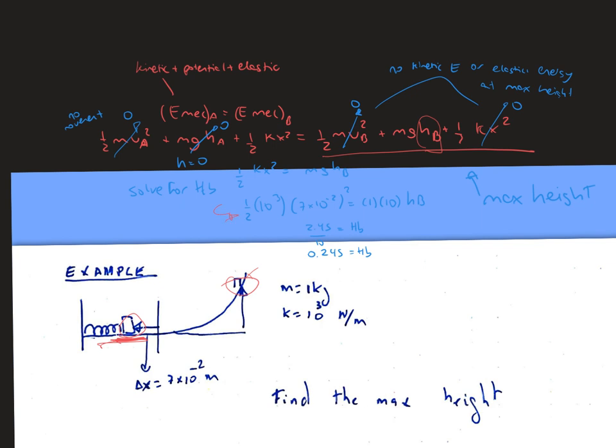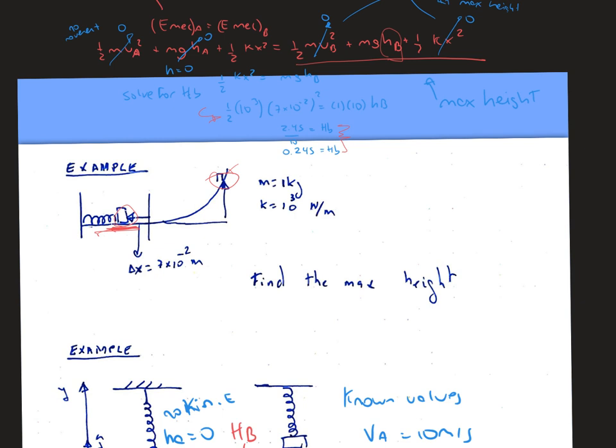times 7 times 10⁻² squared equals 1 times g times h_B. Then we do the multiplication, some algebra, and we have 0.245 for h_B, or the maximum height. In this case the units are meters, and that's the final answer.